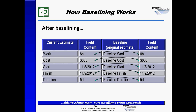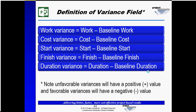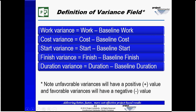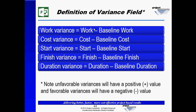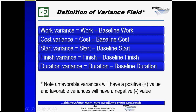As we begin to look at variance analysis, we now see how Microsoft Project automatically calculates the difference between the original estimate and the current estimate. For example, the work field, or the current estimated work field, can be different from the original baseline work field as the plan changes. The same is true for cost, start, finish, and duration. So Microsoft Project will look at the difference between the original estimate and the current estimate and generate these automatically calculated fields called variances.